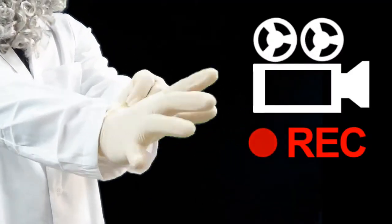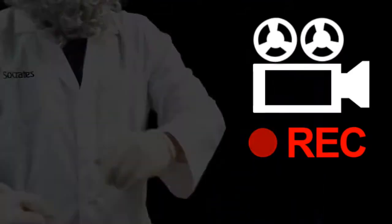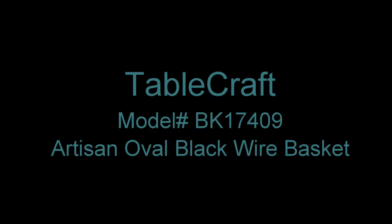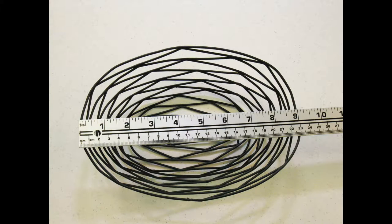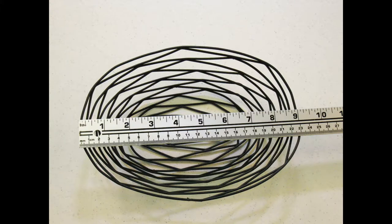Today we have several cases of new tablecraft model number BK17409 Artisan Oval Black Wire Basket. The field measurements for the top is 9 inches in length and 6 1⁄4 inches in width.